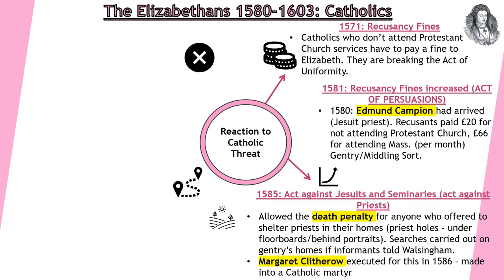In 1585, we see the Act Against Jesuits and Seminary Priests introduced. This now allows the death penalty for anybody who offers shelter to a priest in their own home — in the priest holes, which are underneath floorboards or behind portraits. Searches were carried out on a much larger scale in gentry's homes. Even informants told Walsingham that a priest potentially was being held. Margaret Clitherow is an example — a woman who is executed for this in 1586.